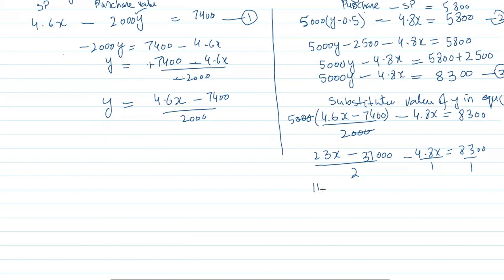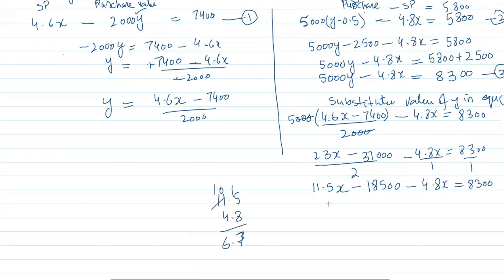After substitution and simplification, we get: 5 × (4.6x − 7400) / 2 − 4.8x = 8300, which gives 11.5x − 18500 − 4.8x = 8300. Collecting x terms: 11.5x − 4.8x = 6.7x. Moving −18500 to the right: 6.7x = 8300 + 18500 = 26800.